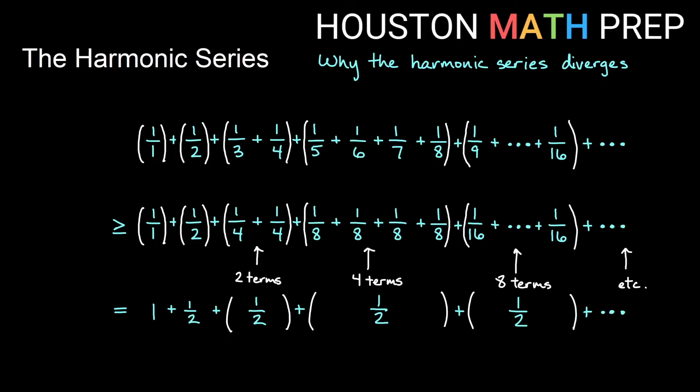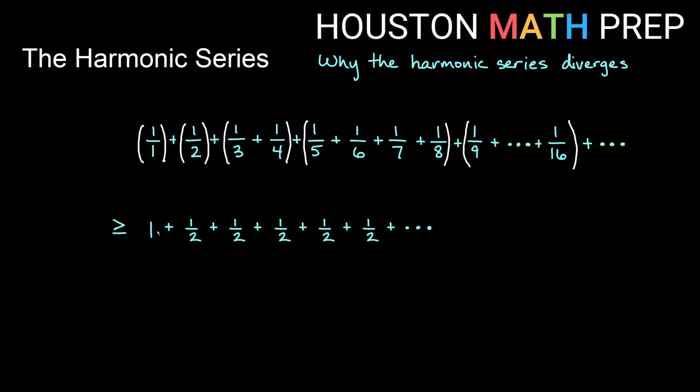Since we have an infinite number of terms to use, we can keep adding 1 half forever. So what is it going to look like if I have 1 plus 1 half continually and I add 1 half forever? Well it may not happen very quickly, but what's happening is if I'm adding a half forever, then we're going to eventually add up to some larger and larger number that approaches infinity. So this will diverge.